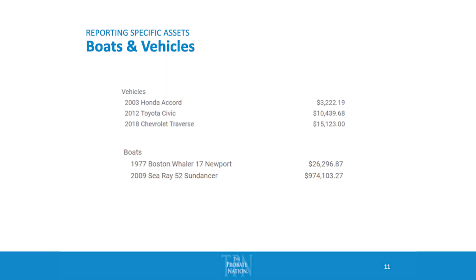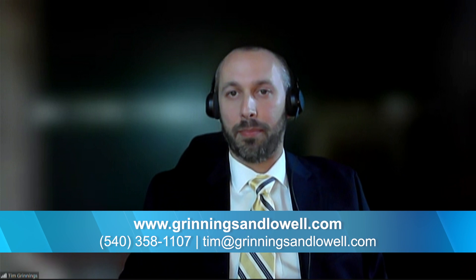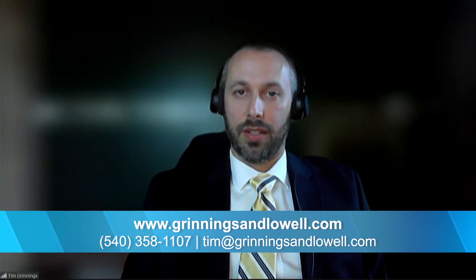For boats and vehicles, it's pretty simple — be as specific as possible. You don't need VIN numbers, but list year, make, model, and the market value as of the date you received it. For automobiles, Kelly Blue Book is a quick reference. If you have a boat and don't know its worth, you can do a Craigslist or Facebook Marketplace search of similar items to get an estimate of the value.